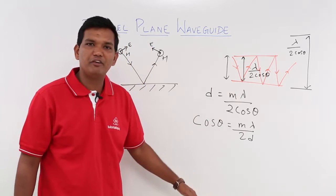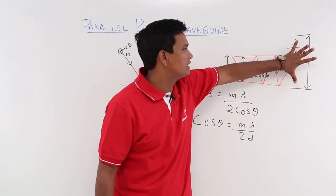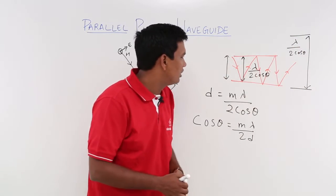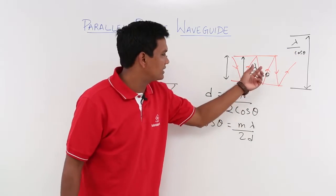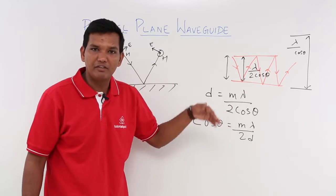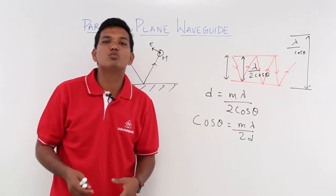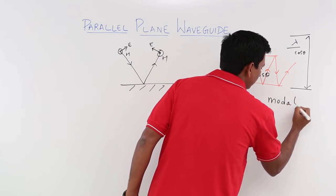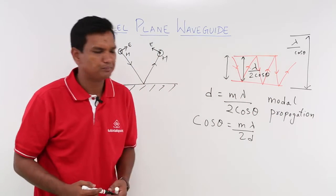So if you are launching at different angles, or equivalently from different plate spacings — for example, one case gives λ/(2·cosθ) and another gives λ/cosθ — when you launch for different values of m, you will have different launching angles or different distances between the plates. This is what is called modal propagation — for different values of m, you have different combinations of angle and spacing.